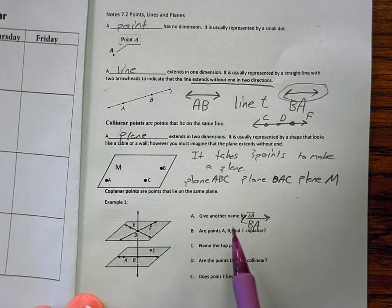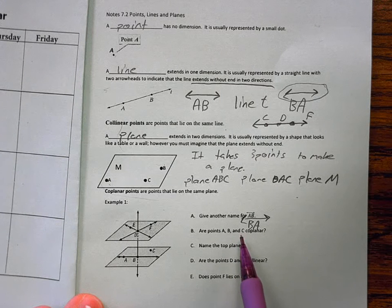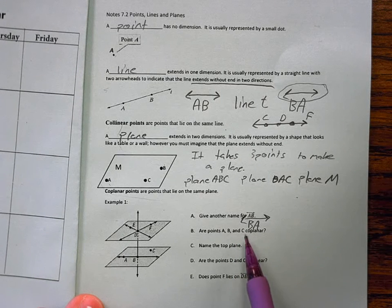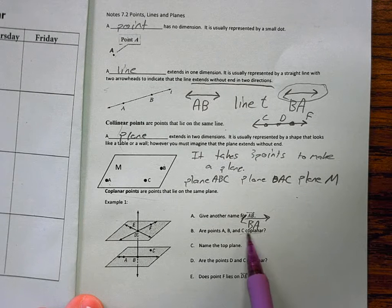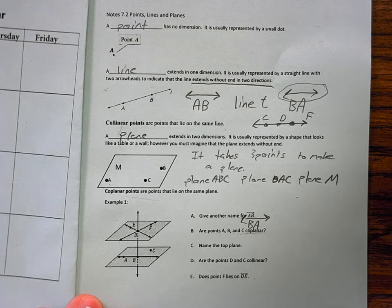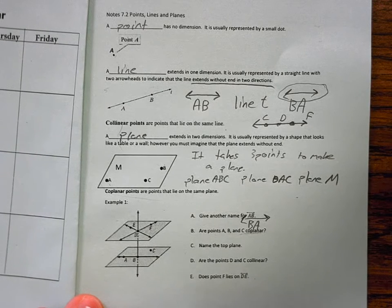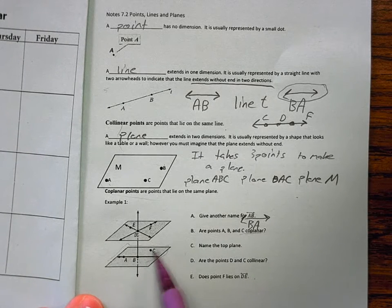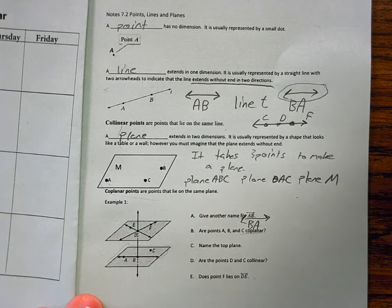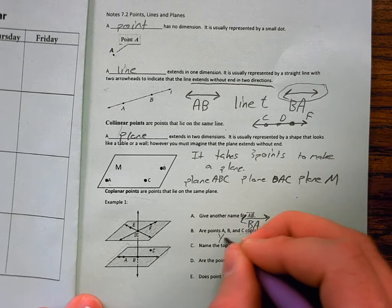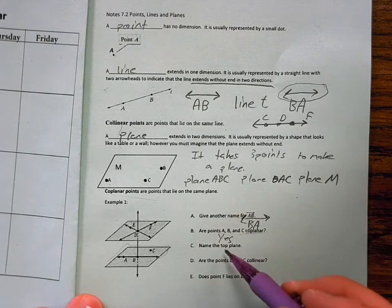Are points A, B, and C coplanar? What do you think coplanar means? Same plane? So are A, B, and C all on the same plane? Yes. Yeah. This is a plane. They're all lying on that plane.